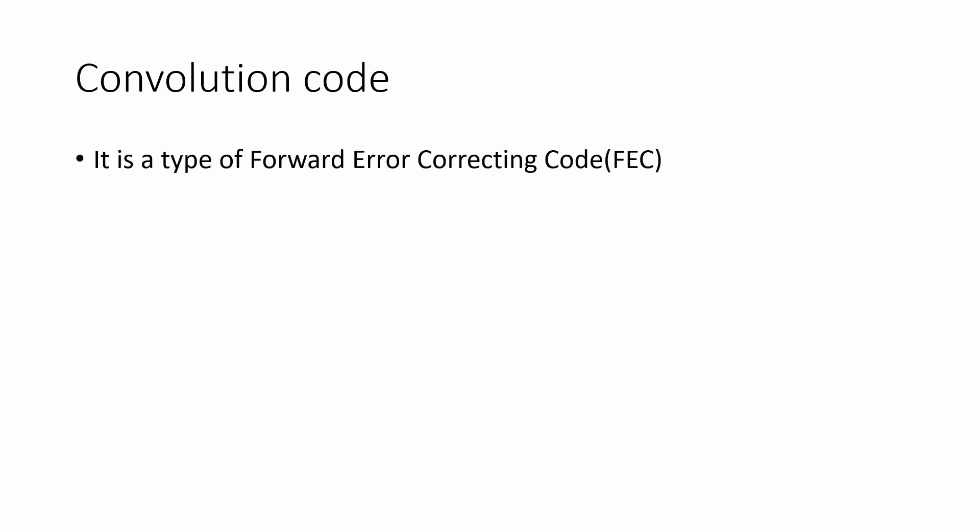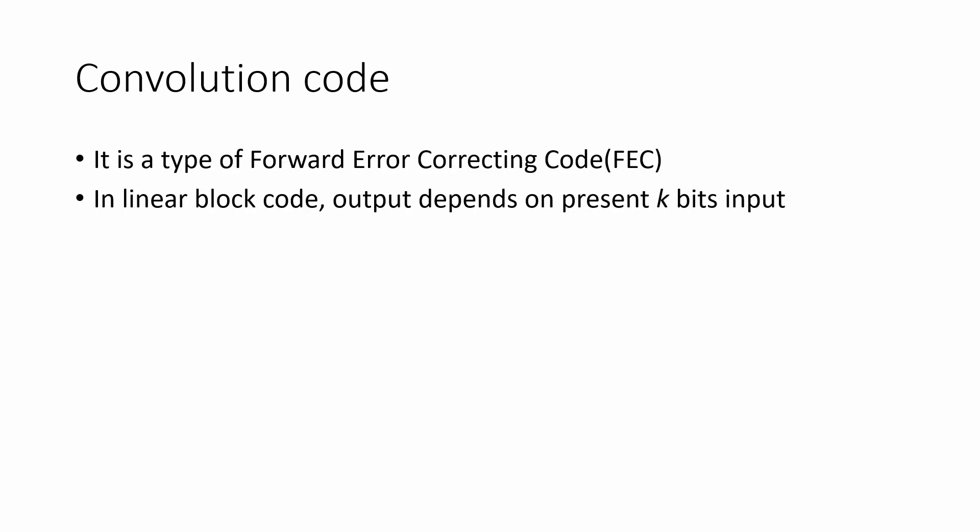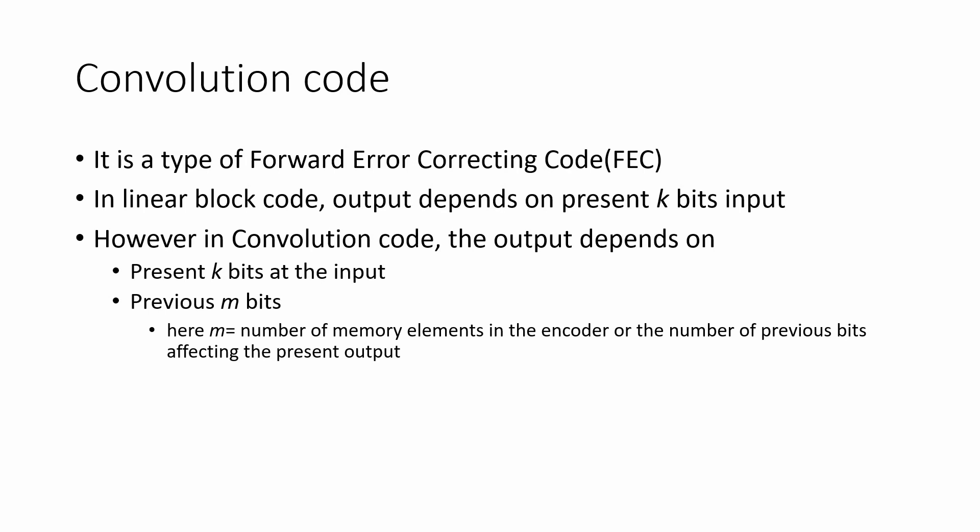Convolution code is a type of forward error correcting code, like the linear block code which we have seen earlier. In linear block code, the output depends on the present k-bit block of data. However, in convolution code the output depends not only on the present k bits at the input of the encoder, but it also depends upon m previous bits. Here, small m is equal to the number of memory elements in the encoder, or the number of previous bits that affect the present output.